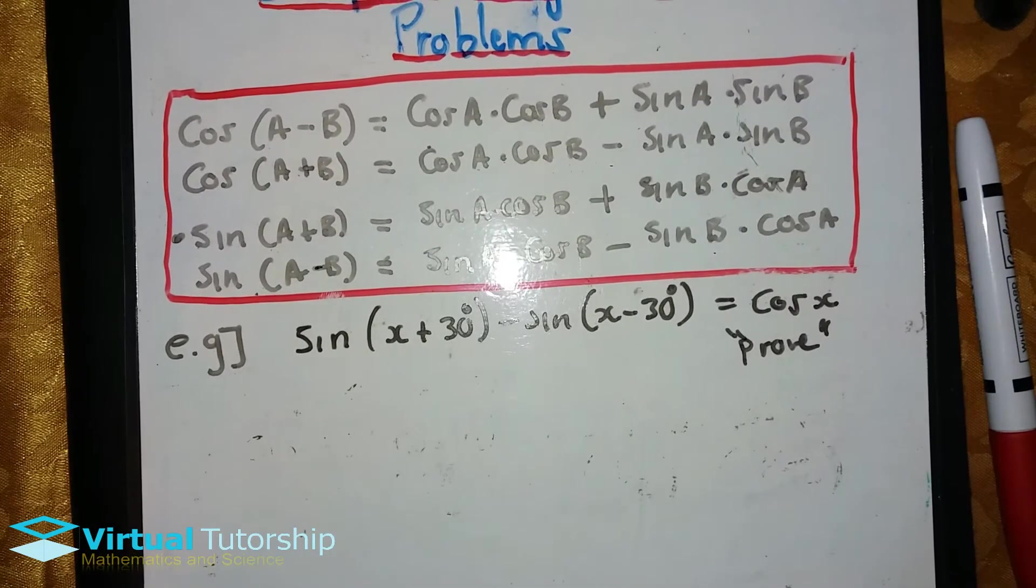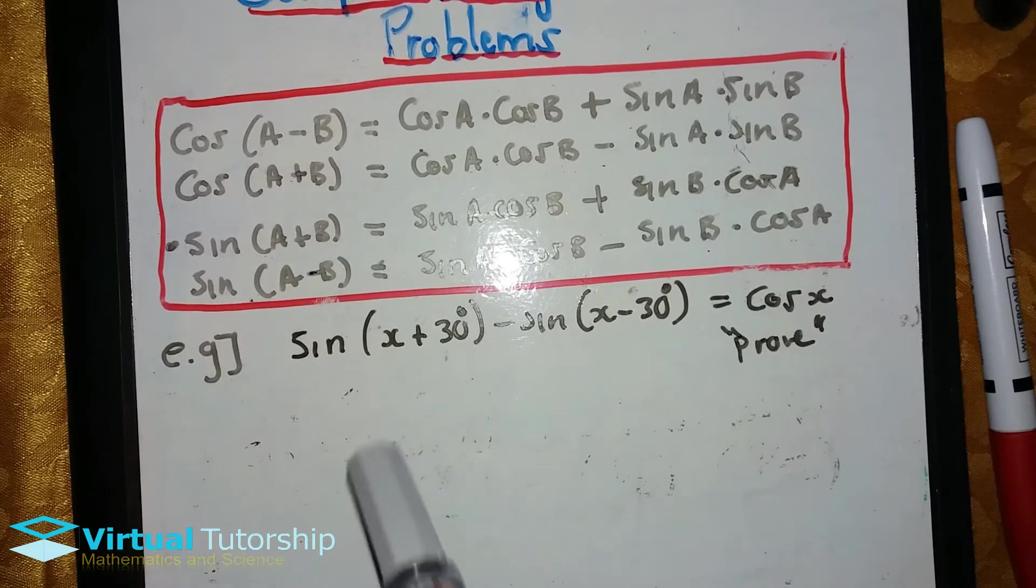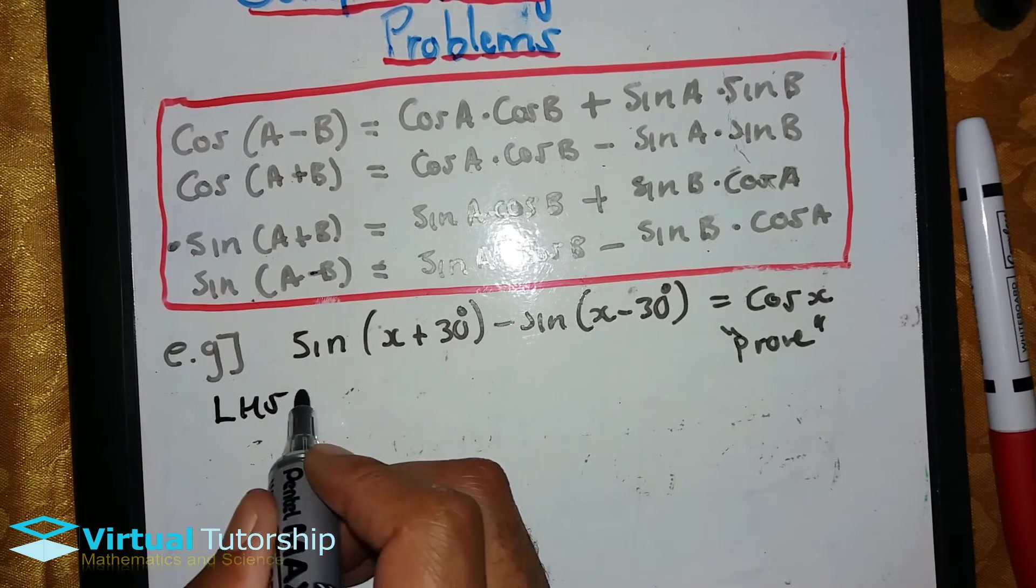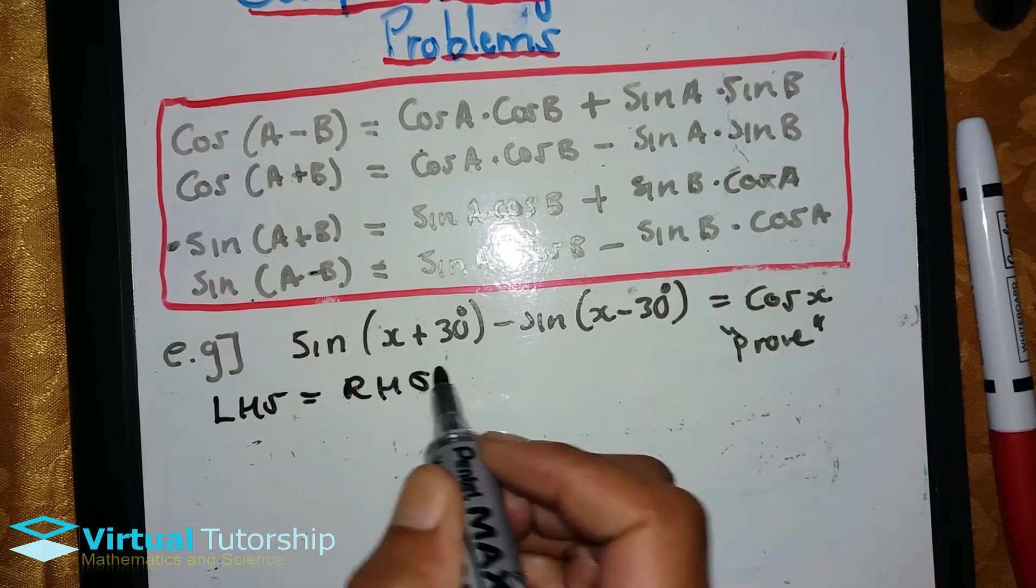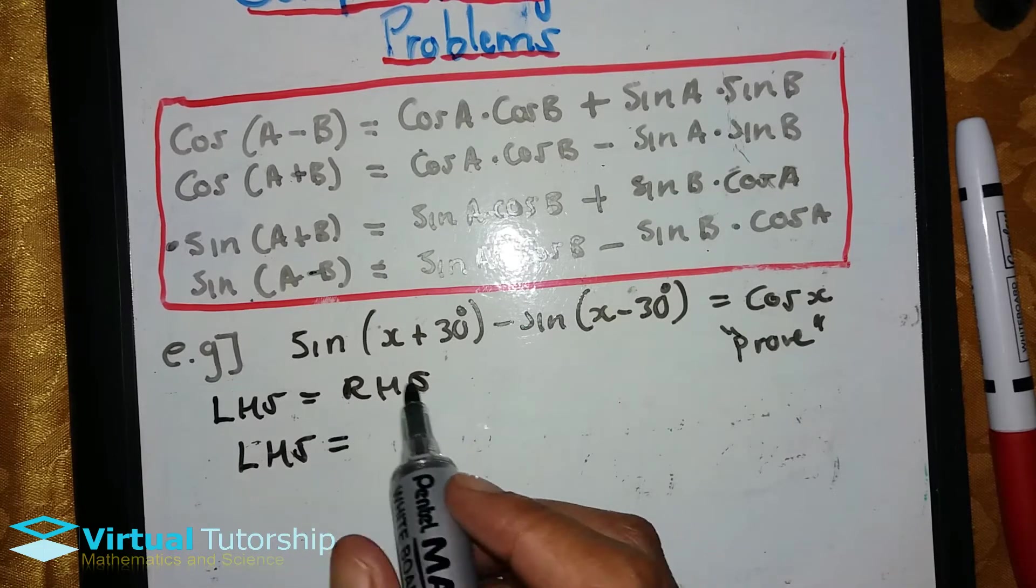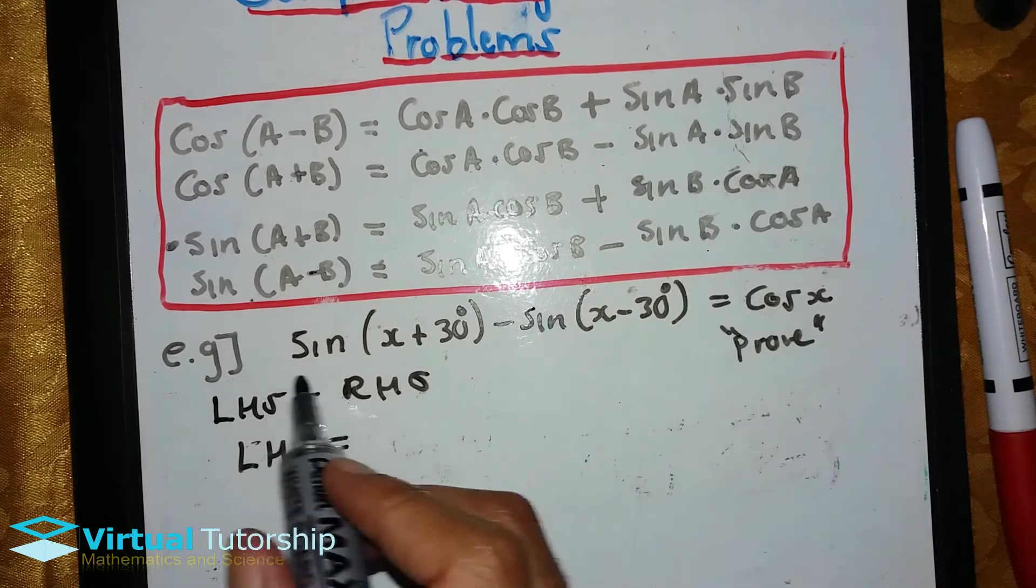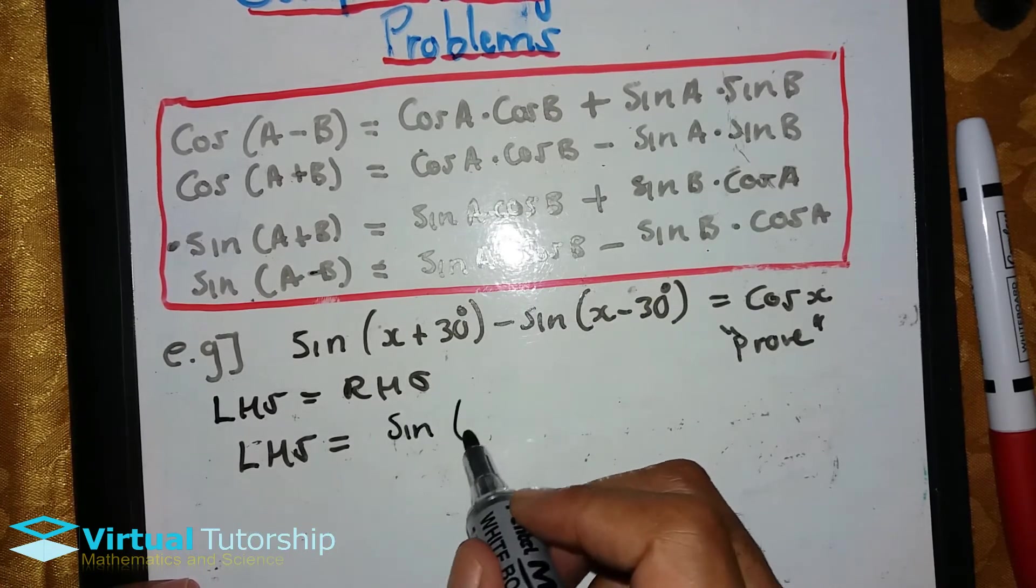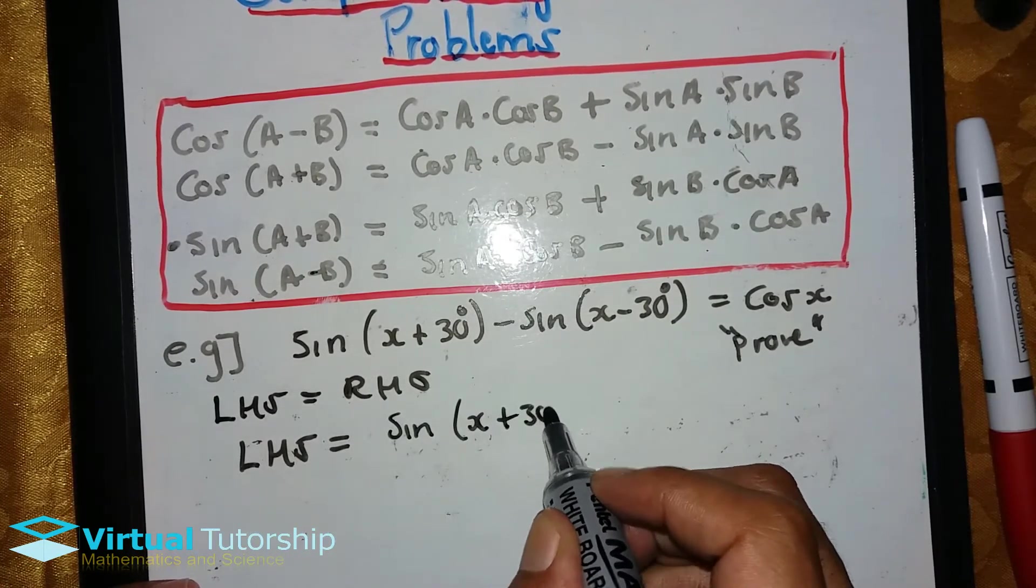Alright, now we have another example. We have sine x plus 30 degrees minus sine x minus 30 degrees equals cosine x. But prove the above. On the left hand side, I will prove that the left hand side is equal to the right hand side. So the left hand side is sine x plus 30 degrees minus sine x minus 30 degrees.